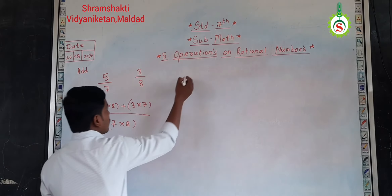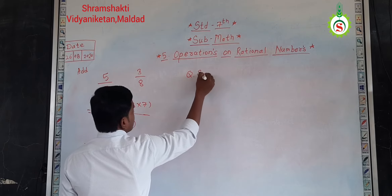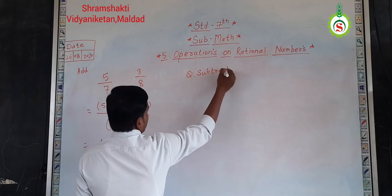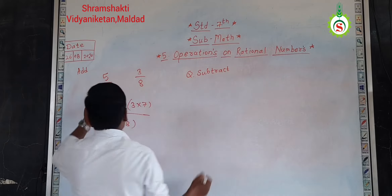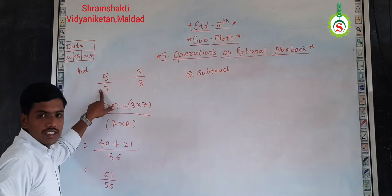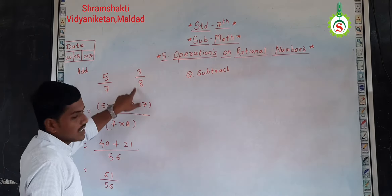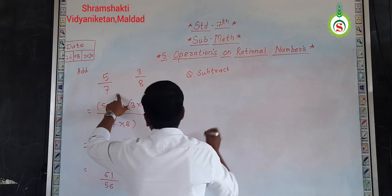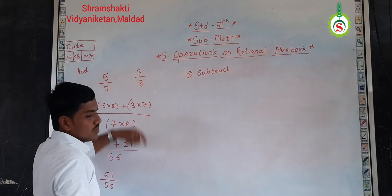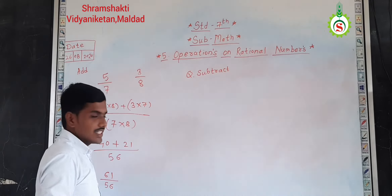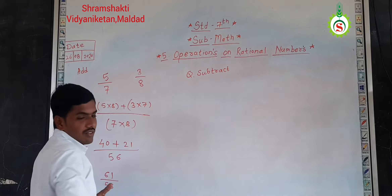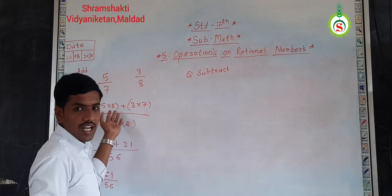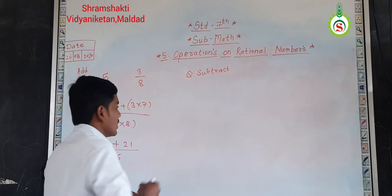Now, the second question is subtraction. And again, same numerators — five by seven, three by eight. Now, if I want to subtract those two rational numbers, what I will do? As seen in the last lecture, we will do the same process.